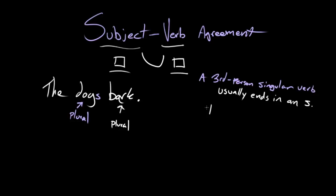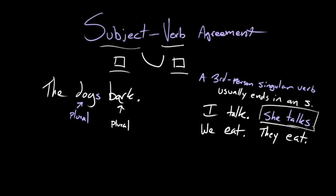So I talk, that's first person. Third person is she talks. We eat, that's plural first person. They eat. See, no S. It's only this weird third person singular here that's got that S on the end.